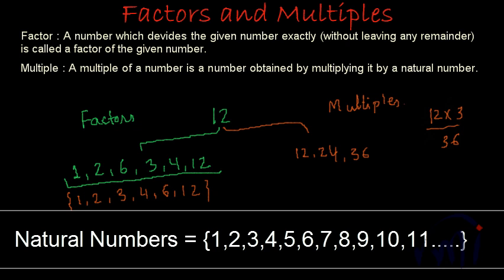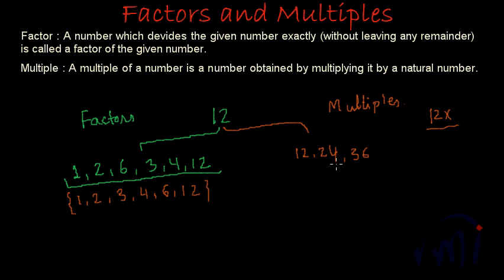Similarly we can find the 4th, 5th and 6th multiples of 12. If you see all these numbers carefully, this is nothing but the table of 12: 12 ones are 12, 12 twos are 24, 12 threes are 36, 12 fours are 48, 12 fives are 60, then 72, then 84, and this can continue till infinity. There can be an infinite number of multiples of a given number.